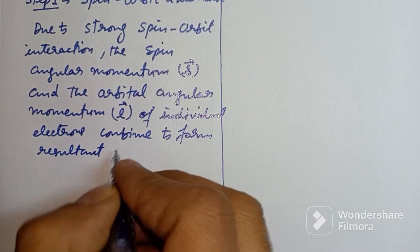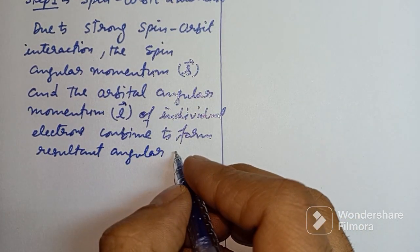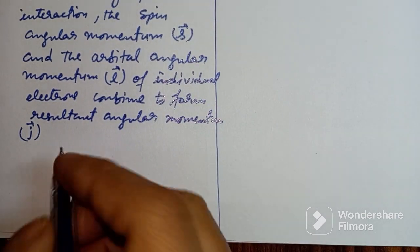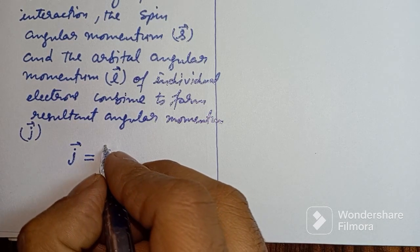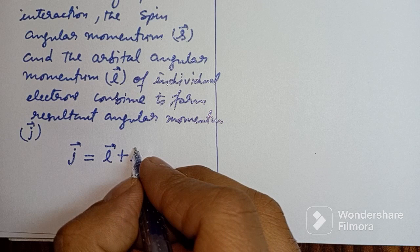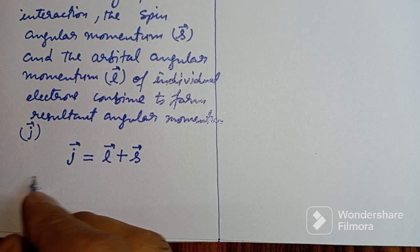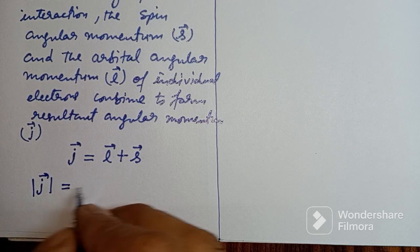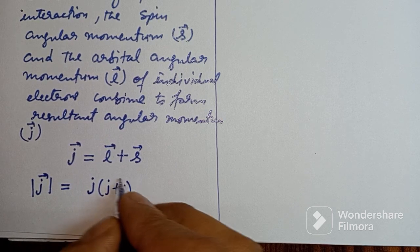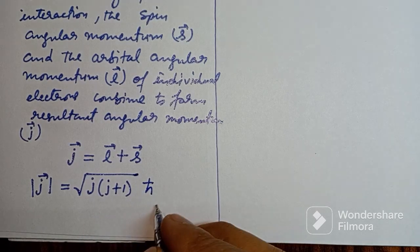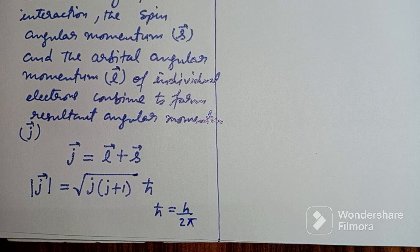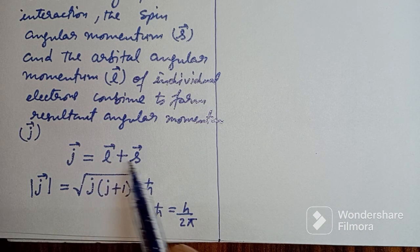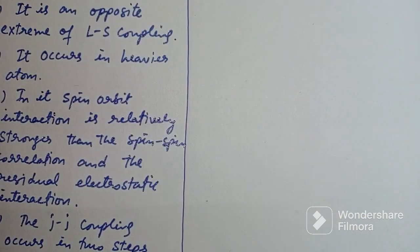Due to strong spin-orbit interaction, the spin angular momentum S and the orbital angular momentum L of individual electrons combine to form a resultant angular momentum called J. So we can write: J = L + S (vector sum). The magnitude of this vector is given by √(J(J+1)) · ℏ, where ℏ = h/2π. This applies to each electron.